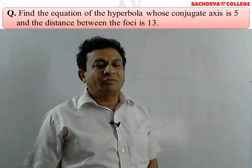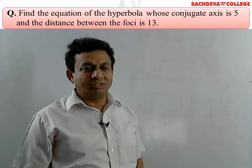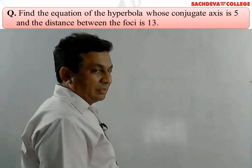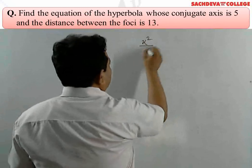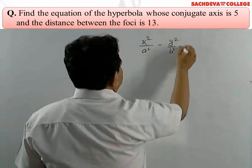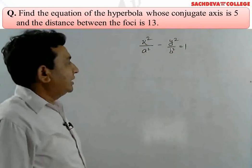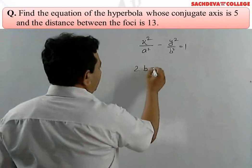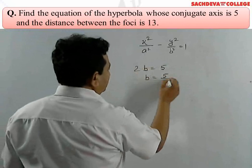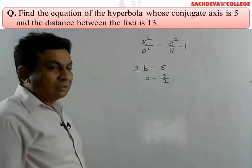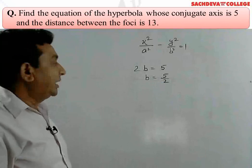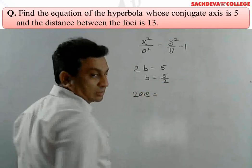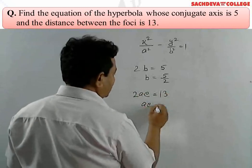Now we solve the next problem: find the equation of the hyperbola whose conjugate axis is 5 and the distance between the foci is 13. Let the equation of the hyperbola be x²/a² - y²/b² = 1. Given that the length of the conjugate axis is 5, and we know the length of the conjugate axis is 2b, so 2b = 5, meaning b = 5/2. The distance between the foci is 2ae = 13, so ae = 13/2.